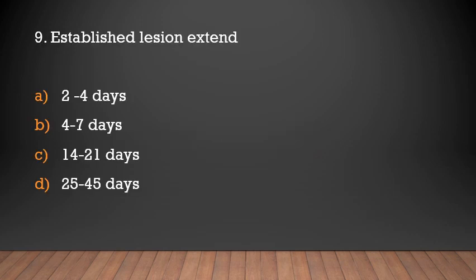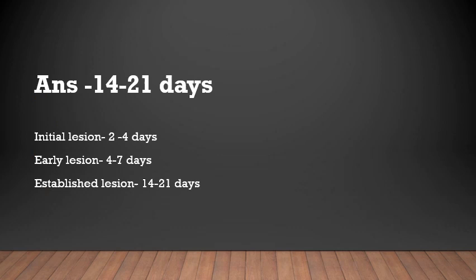Established lesion extends over how many days? 2–4 days, 4–7 days, 14–21 days, or 25–45 days? The answer is 14–21 days. Initial lesion extends 2–4 days, early lesion 4–7 days, and established lesion extends 14–21 days.